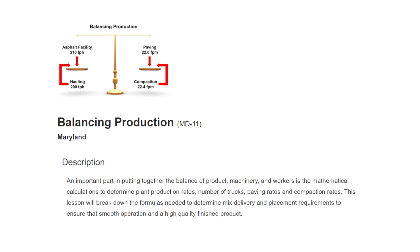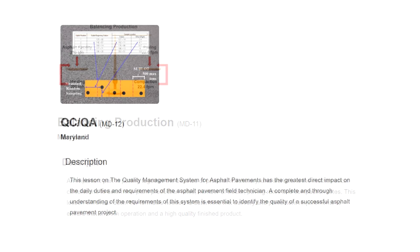Balancing production is an important part of putting together the balance of product, machinery, and workers. It involves mathematical calculations to determine plant production rates, number of trucks, paving rates, and compaction rates. This lesson will break down the formulas needed to determine mix delivery and placement requirements to ensure a smooth operation and a high-quality finished product.